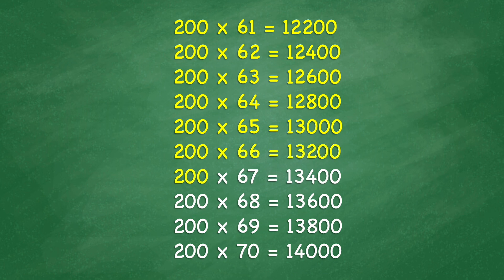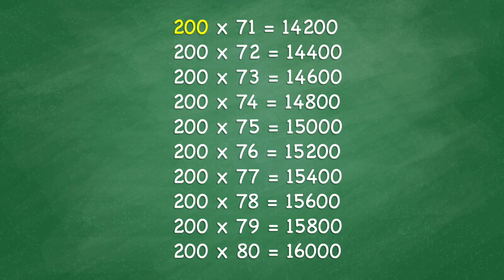200 times 67 equals 13,400. 200 times 68 equals 13,600. 200 times 69 equals 13,800. 200 times 70 equals 14,300.